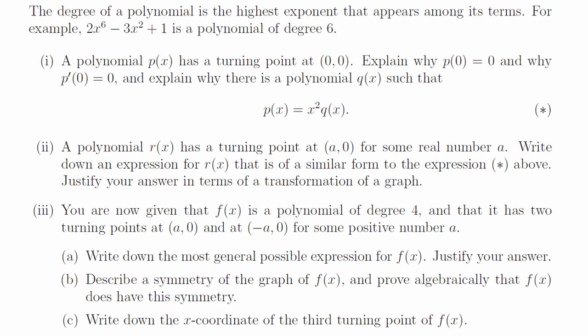Question 3, part 1. It goes through 0, 0, so the value at 0 is 0, and that's a turning point, so the derivative at 0. That means that the constant coefficient of the polynomial is 0, and also the coefficient of x is 0, so there's a factor of x squared. Part 2. Translate the previous polynomial by a units to the right. Now it's got the turning point at a, 0, and it can be written as x minus a squared times a polynomial.